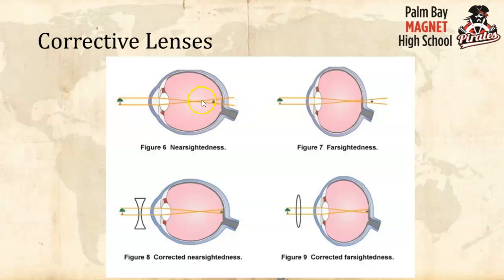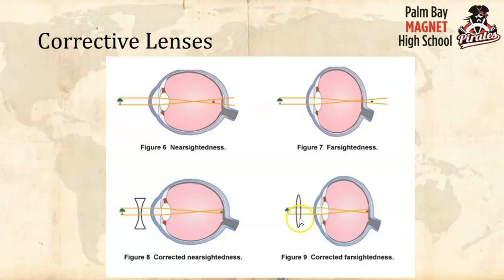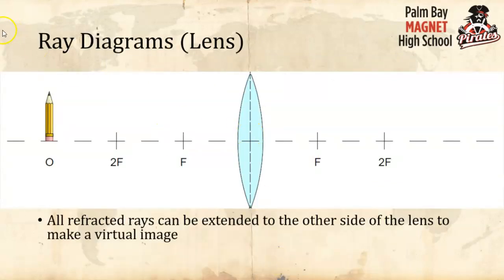Farsightedness is the opposite — your eye is squished the other way or the lens doesn't have enough material, so the image falls behind the cells. We correct it by adding a converging lens — reading glasses. You can't do laser surgery to add material, so you need the external lens.